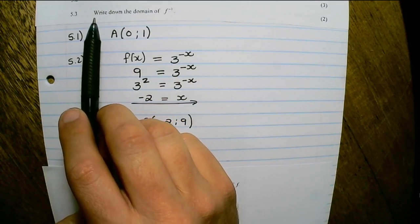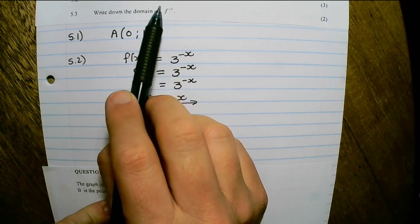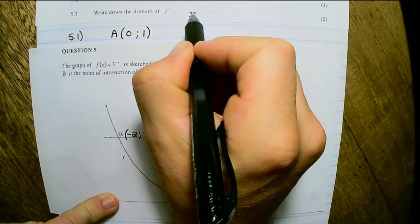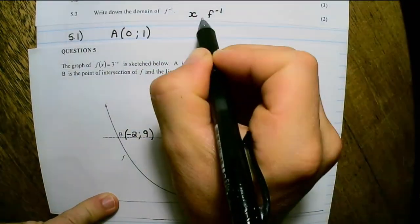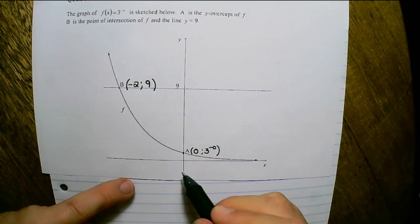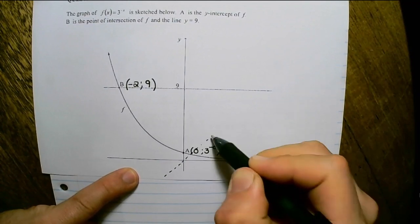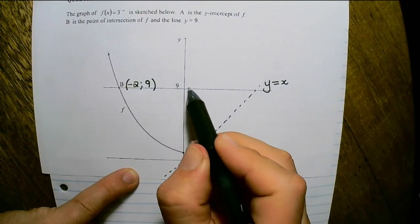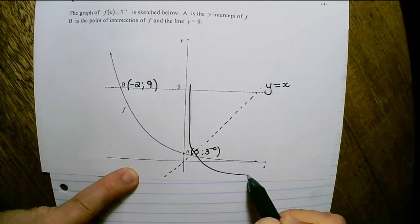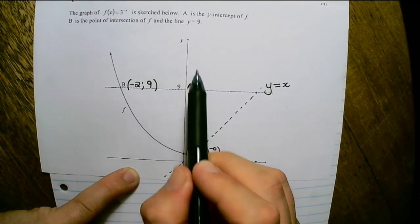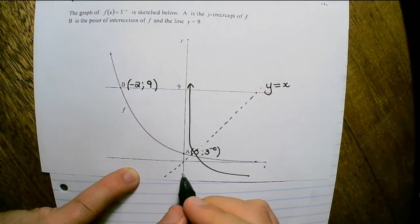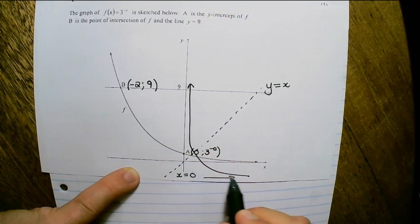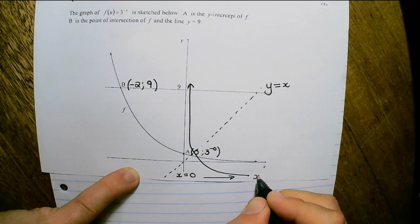The next question says: write down the domain of the inverse function. The domain refers to the x values of the inverse function. The inverse function is the reflection of the graph of f(x) over the line y equals x. If I reflect this graph around that line, the y-axis will act as a vertical asymptote, where x equals 0, and the graph moves to the right in the positive direction. So the domain of the inverse is x greater than 0.